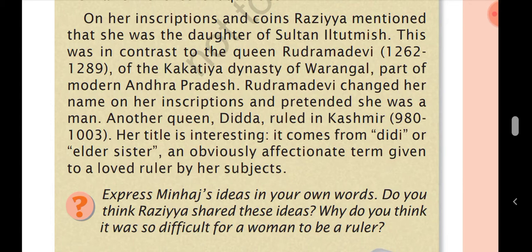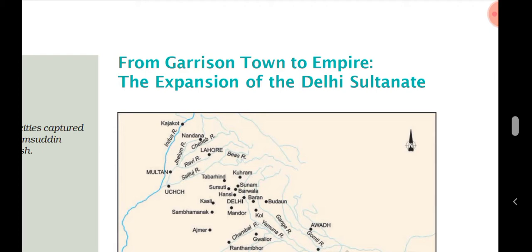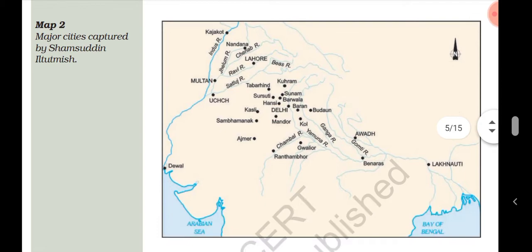Another queen, Didda, ruled in Kashmir. Her title is interesting — it comes from the word 'Didi,' meaning elder sister, an obviously affectionate term given to a loved ruler by her subjects. This helps us understand what the thinking of people was at that time regarding women rulers.